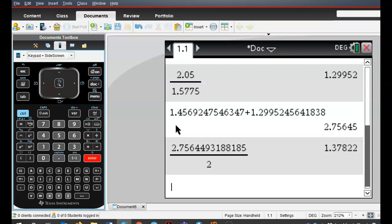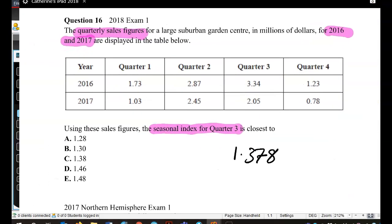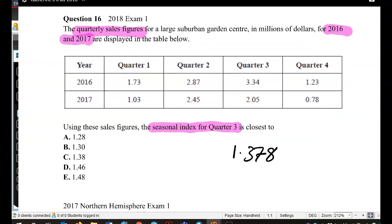So around that 1.378. So it's closest to C, 1.38.